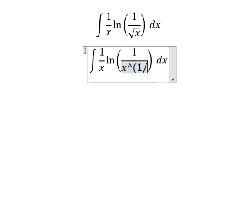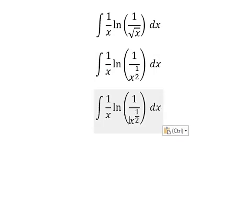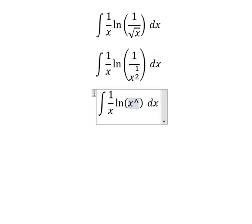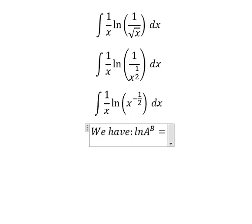We can write the square root as x to the power of 1/2, and then convert this to x to the power of negative 1/2. Now we have the formula: ln(A^B) equals B times ln(A).